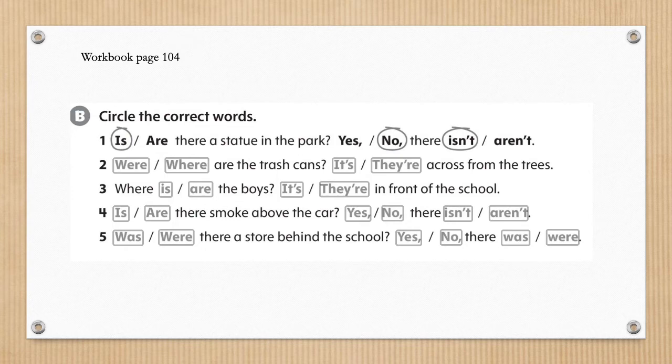Okay students, please continue on to activity B in your workbook on page 104. Activity B is circling the correct words. An example is number 1. We need to circle: is or are there a statue in the park? Statue is singular, so IS. Is there a statue in the park? Yes or no. No, there isn't. Or yes, there aren't. No, these are wrong. So we circle no and isn't. Students, I would like you to complete number 2, 3, 4, 5 on your own. Remember, if you need time, please pause.